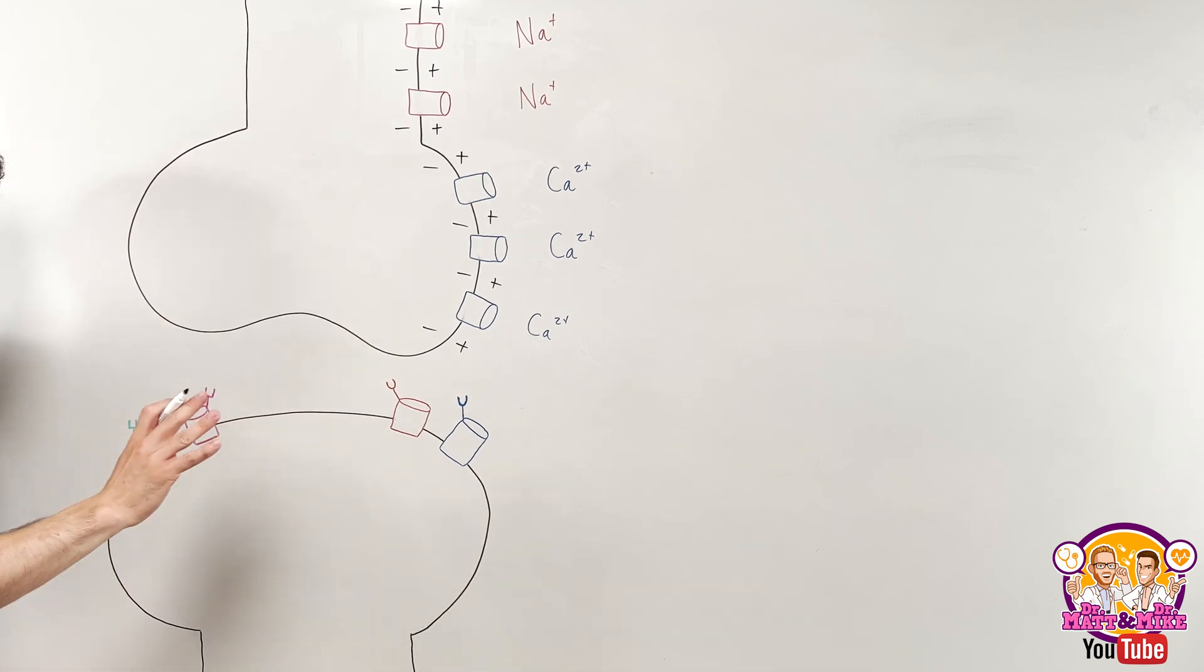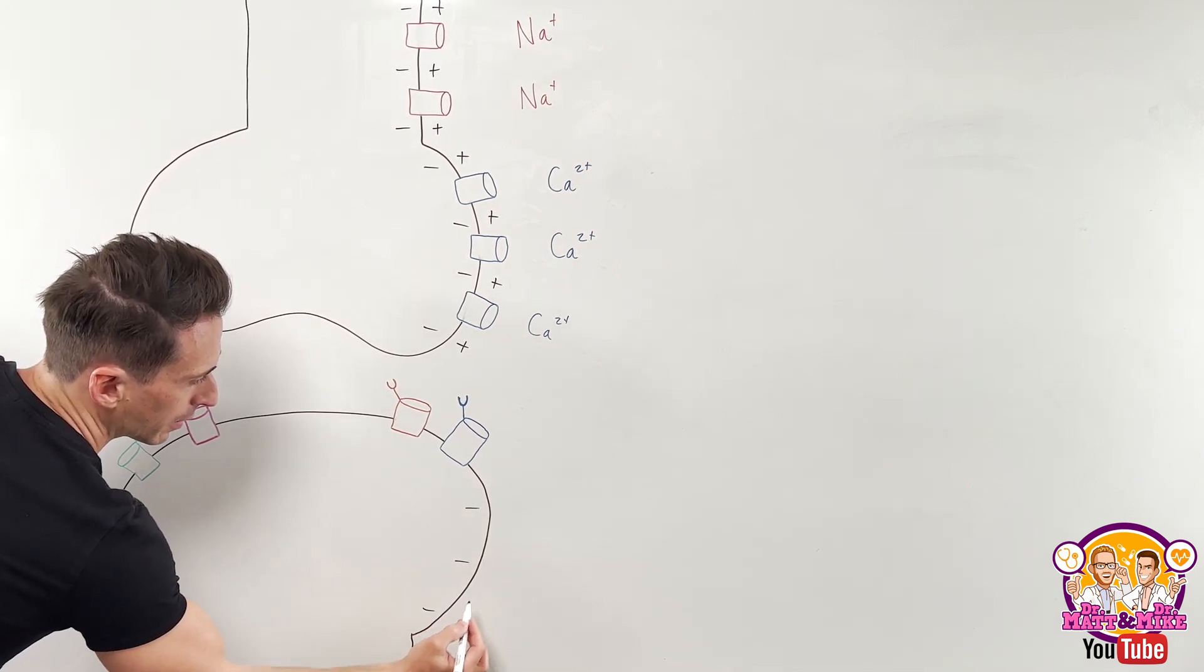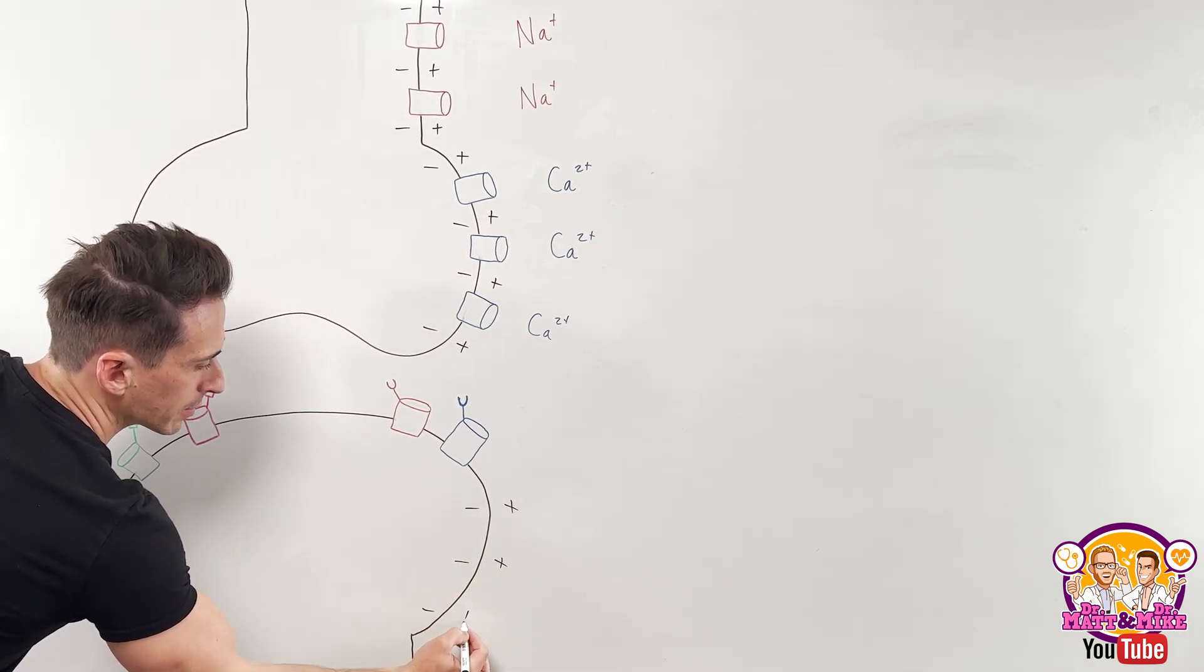And that's going to be the same for all excitable tissue, not just neurons, muscles, glands as well. So let's write it here, it's going to be negative inside and slightly positive outside.